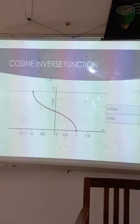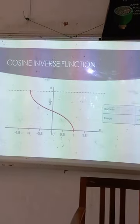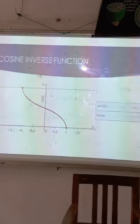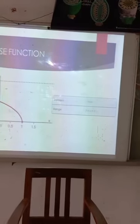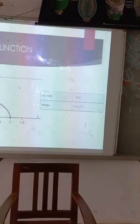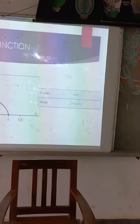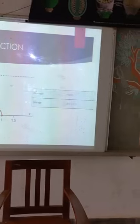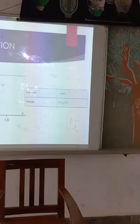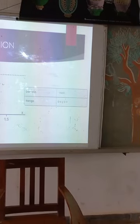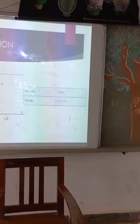Cosine inverse function: The domain is minus 1, less than or equal to x, less than or equal to 1. The range is 0, less than or equal to y, less than or equal to pi.